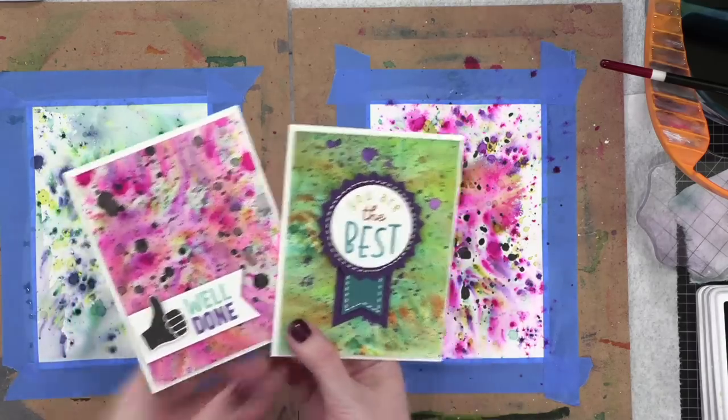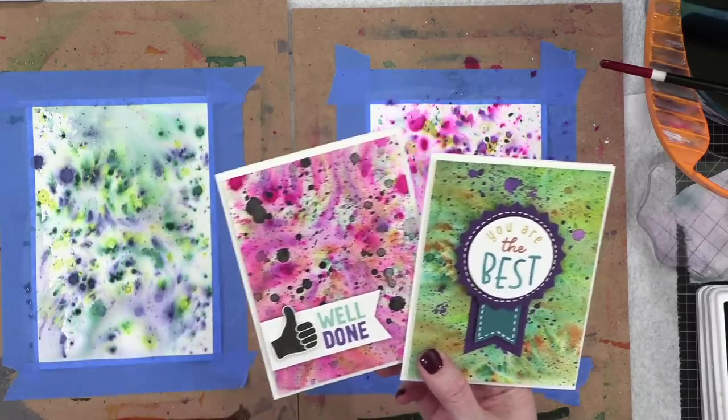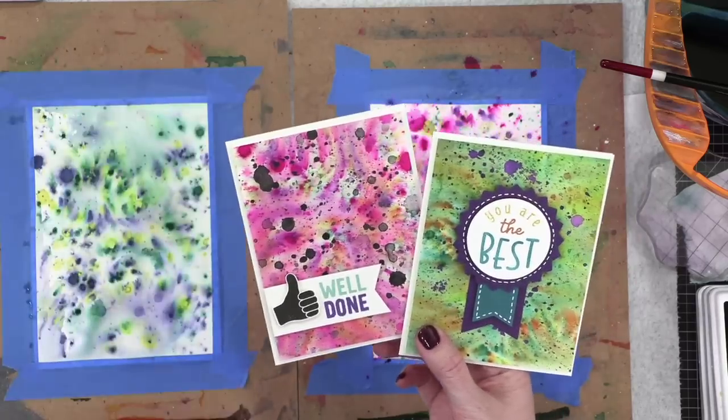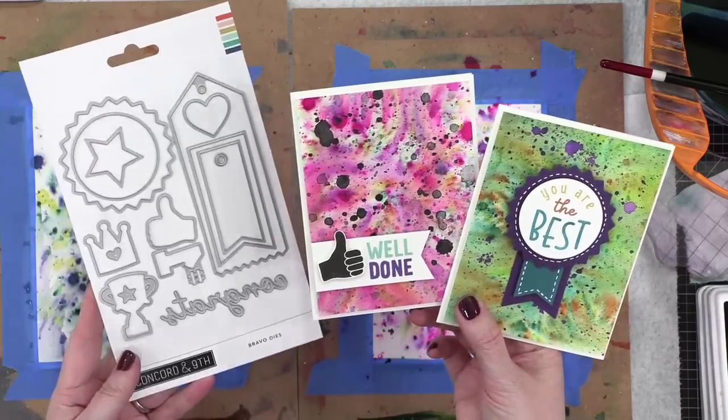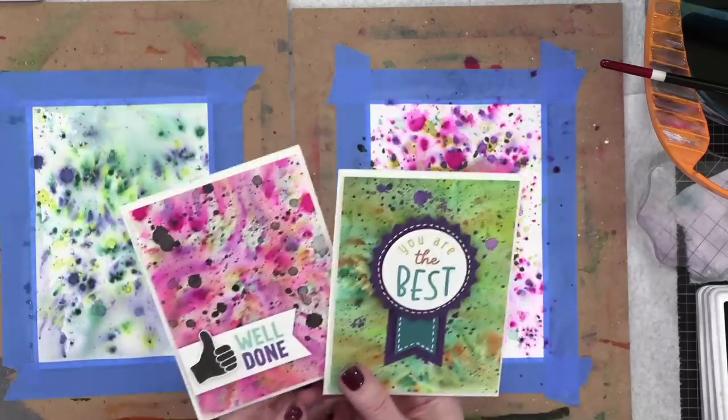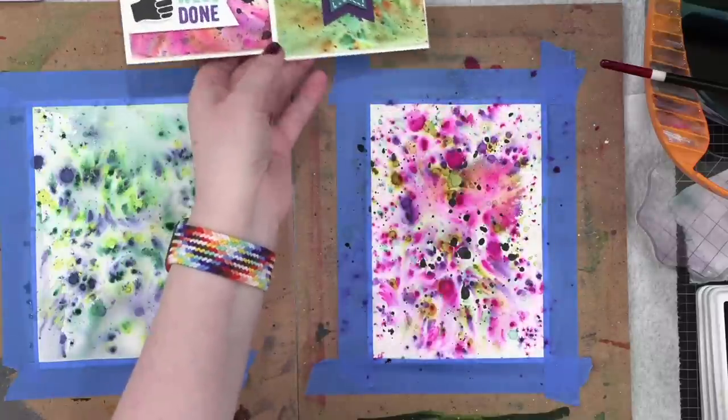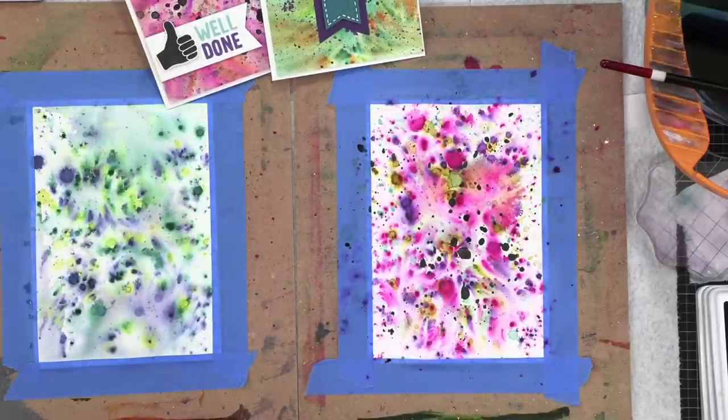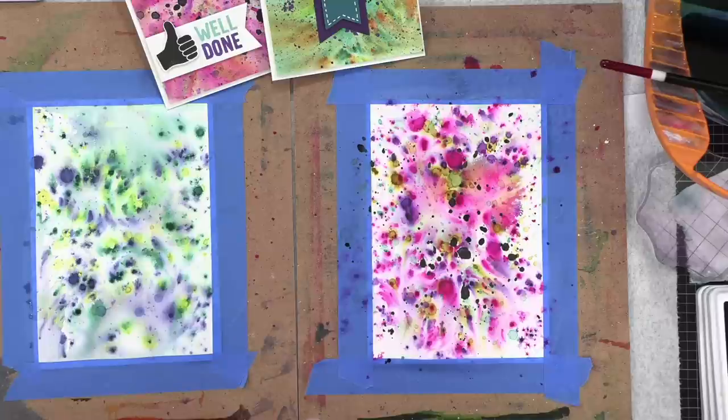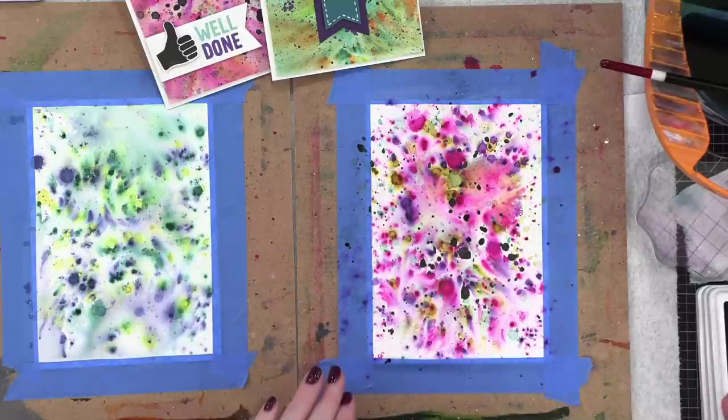I used a stamp set and die set from Concord and Ninth. So it's the Bravo stamp set. And then there's a coordinating die set. So it's Bravo dies. Those are the two kind of products that I used for these cards. This was my technique that I accidentally stumbled upon. And I really like, I liked the troubleshooting we did here tonight, figuring out how to preserve the kind of directional kind of aspect of things. I'm loving how this is moving here. It is really cool.